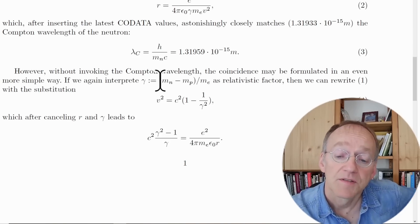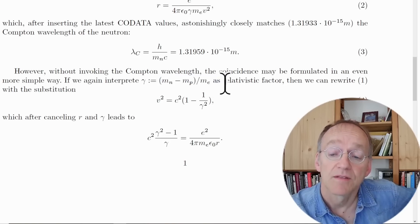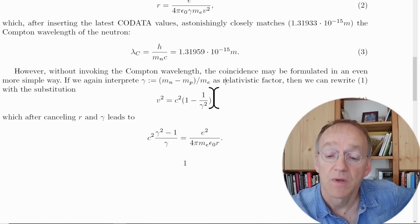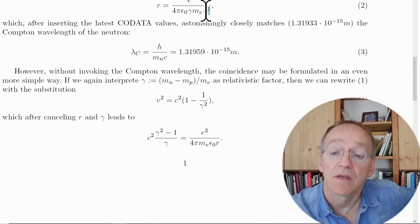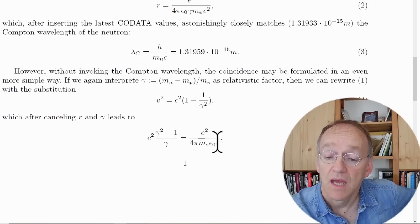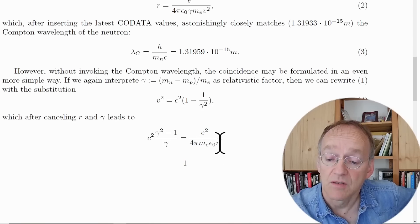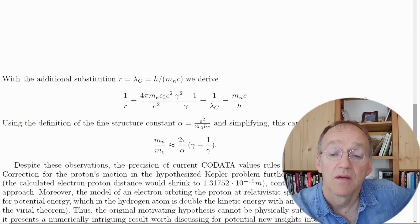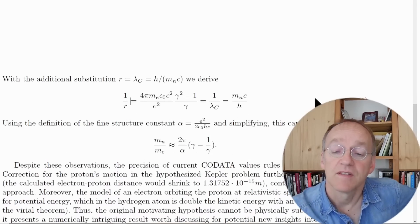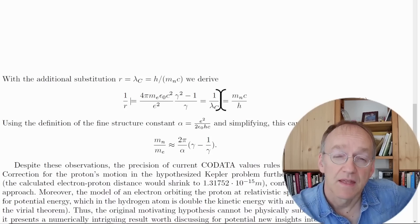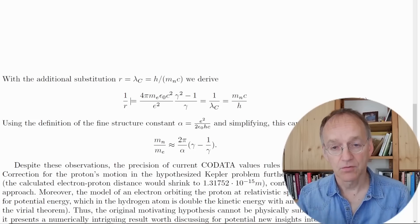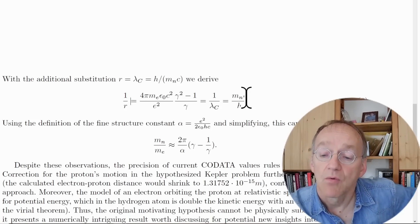If you solve, if you assume this relativistic factor, you put it into the relativistic equation and solve for the square of the speed and insert it above, then you end up with this equation. You see the r is in the denominator but you can phrase it in another way. You observe that this radius is very close to the Compton wavelength of the neutron.